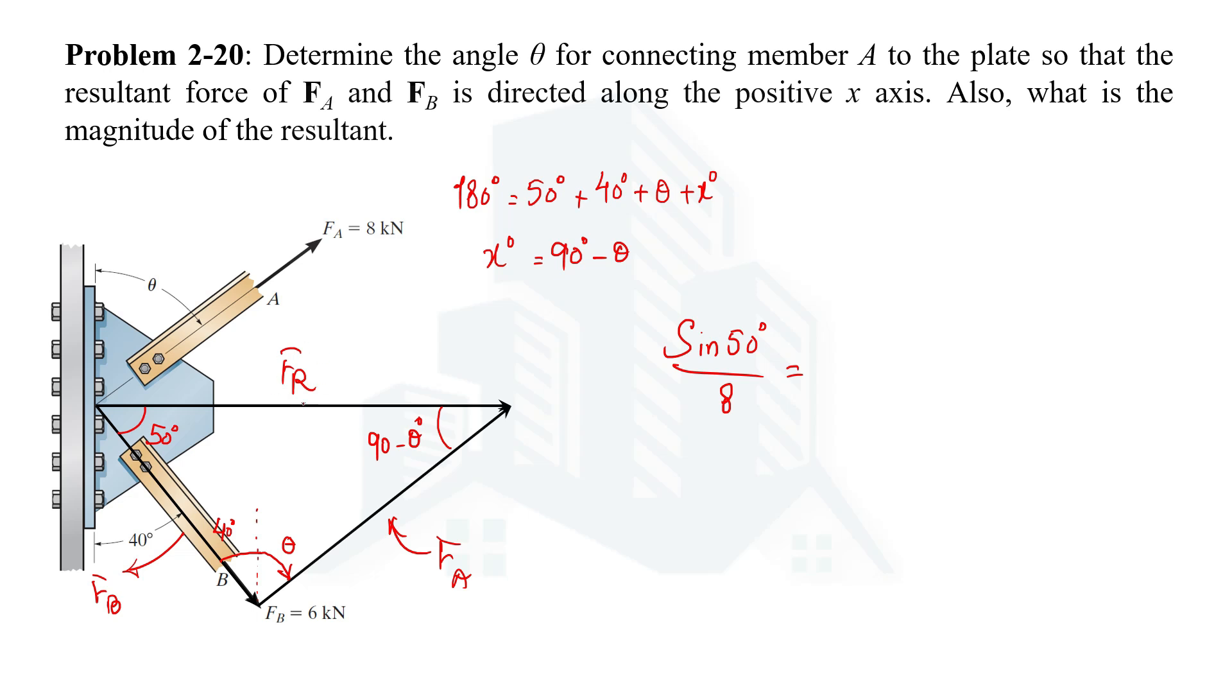So let's equate to sin 90 minus theta, which will be divided by the magnitude of FB force, which is 6.